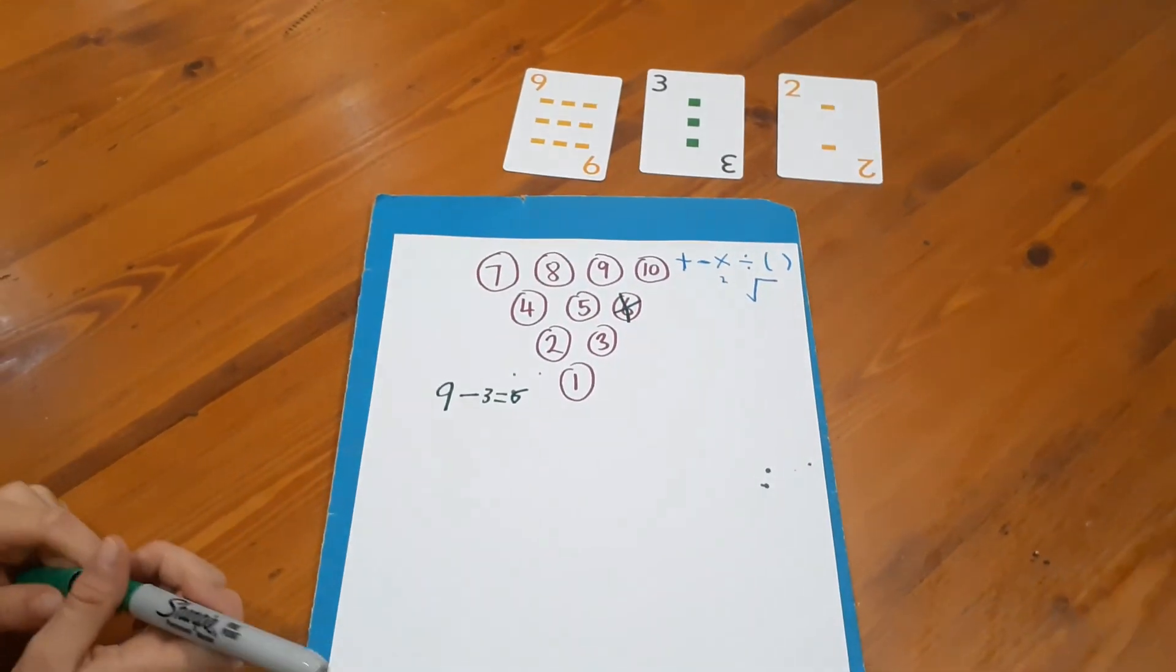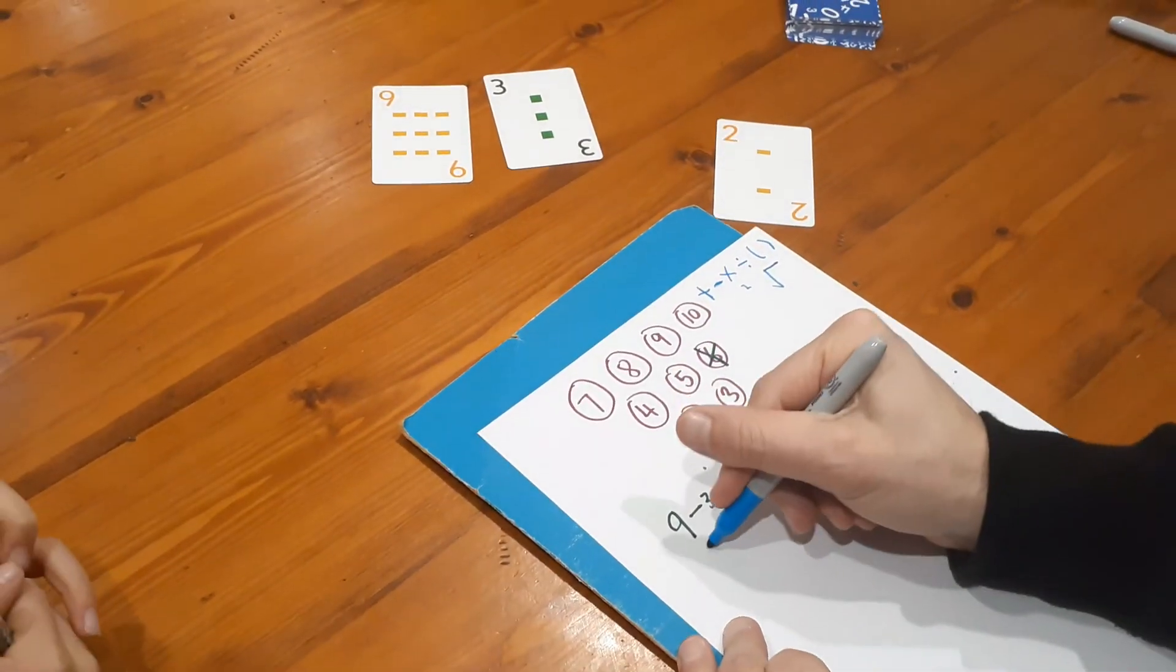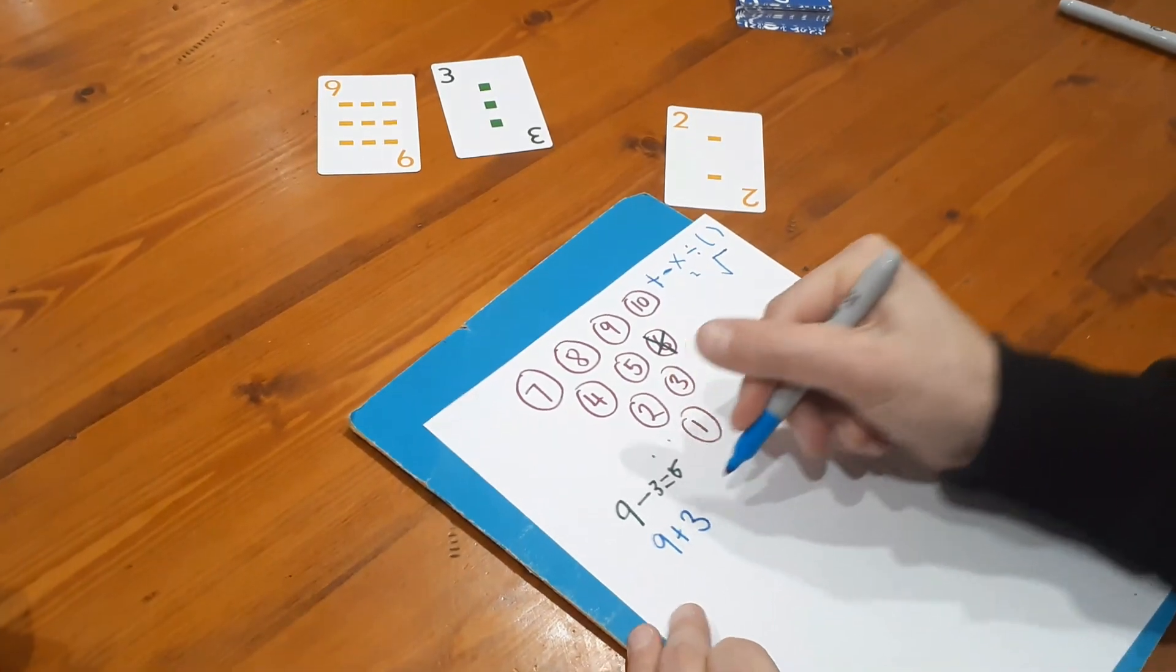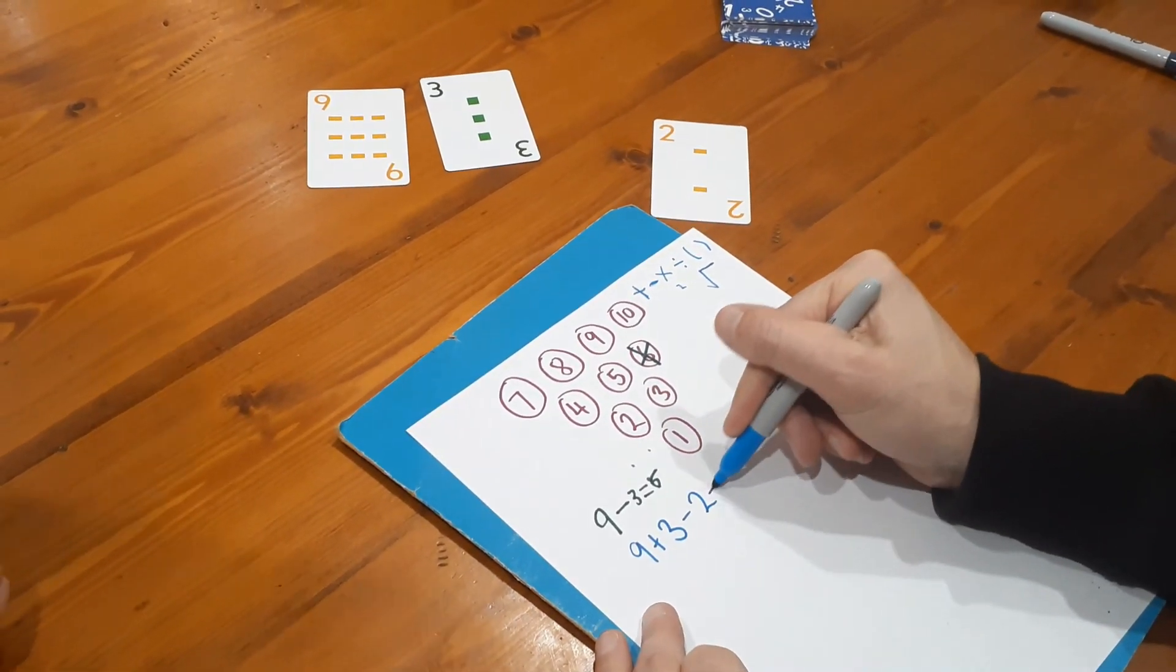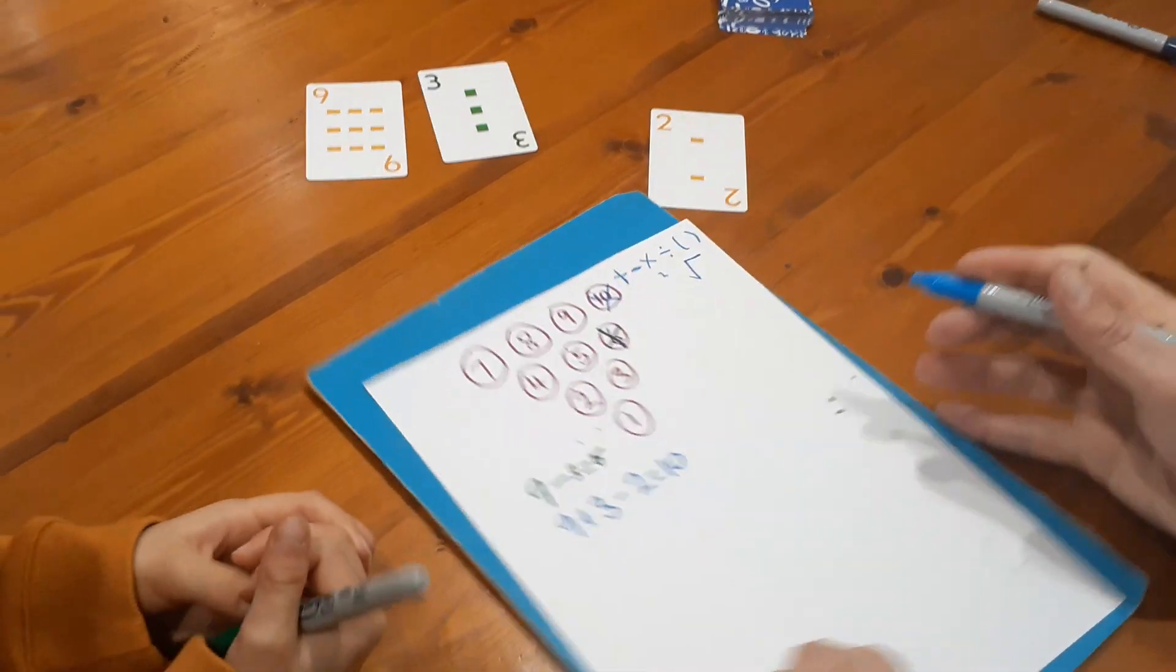I'm gonna do nine plus three take away two, which is 12 take away two is 10. We cross that off.